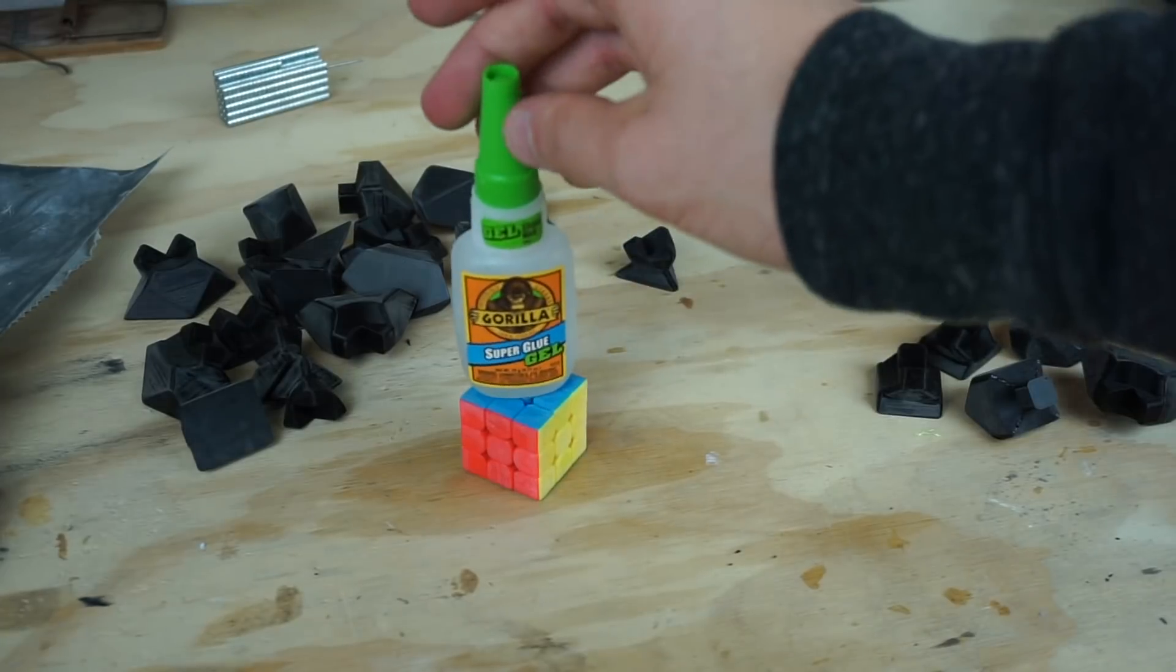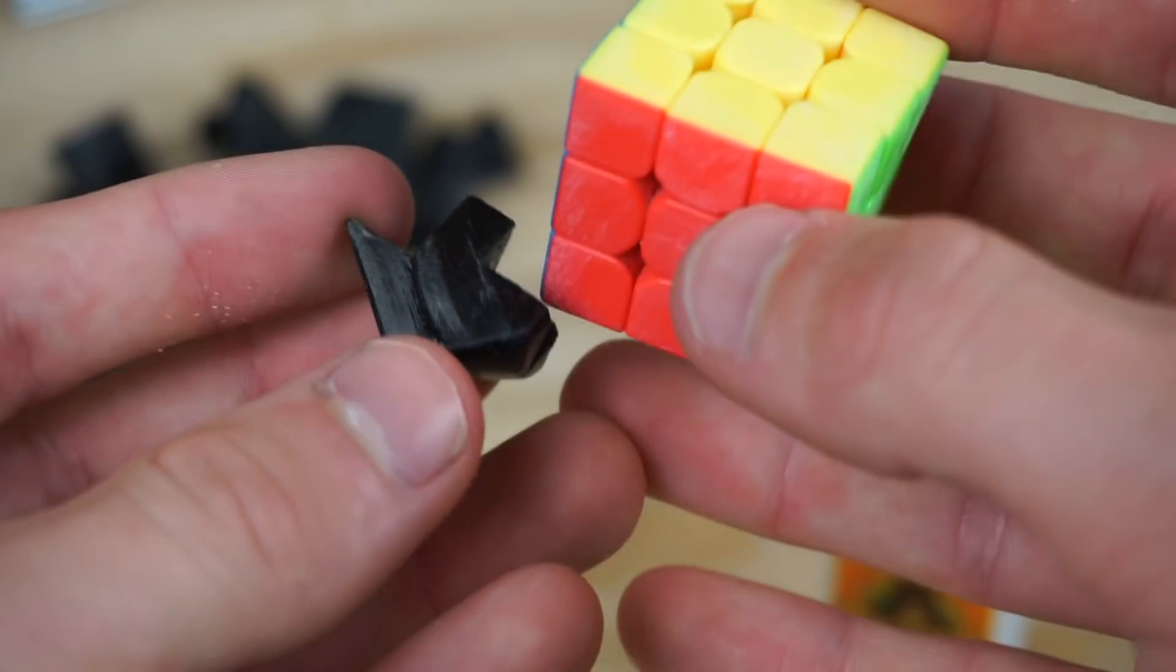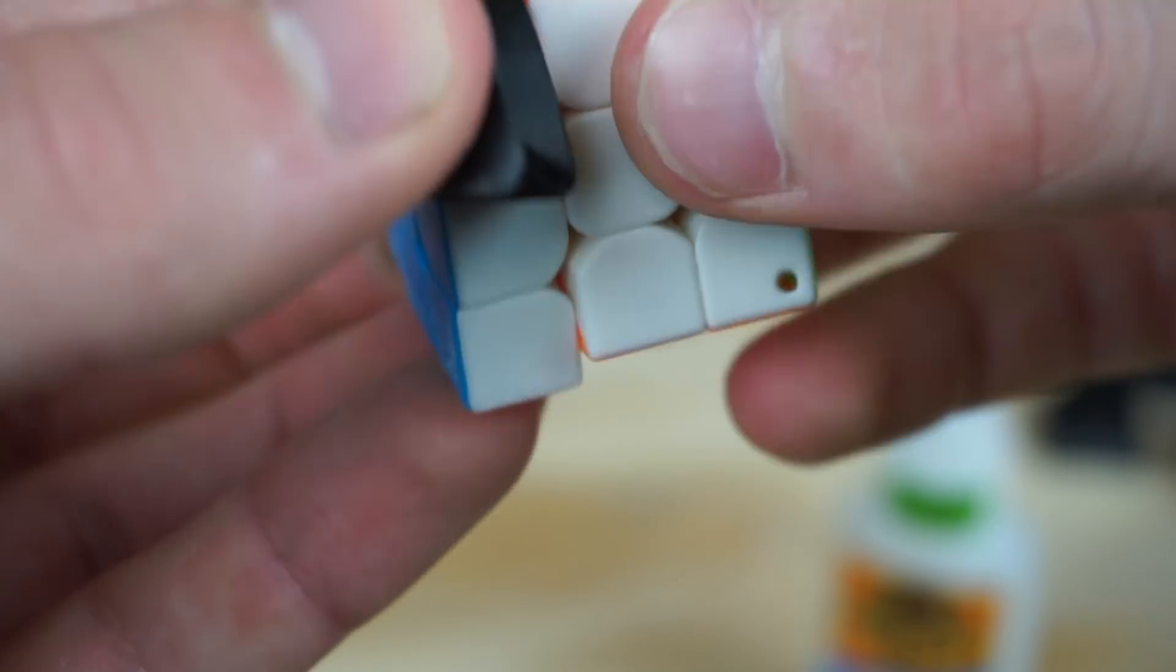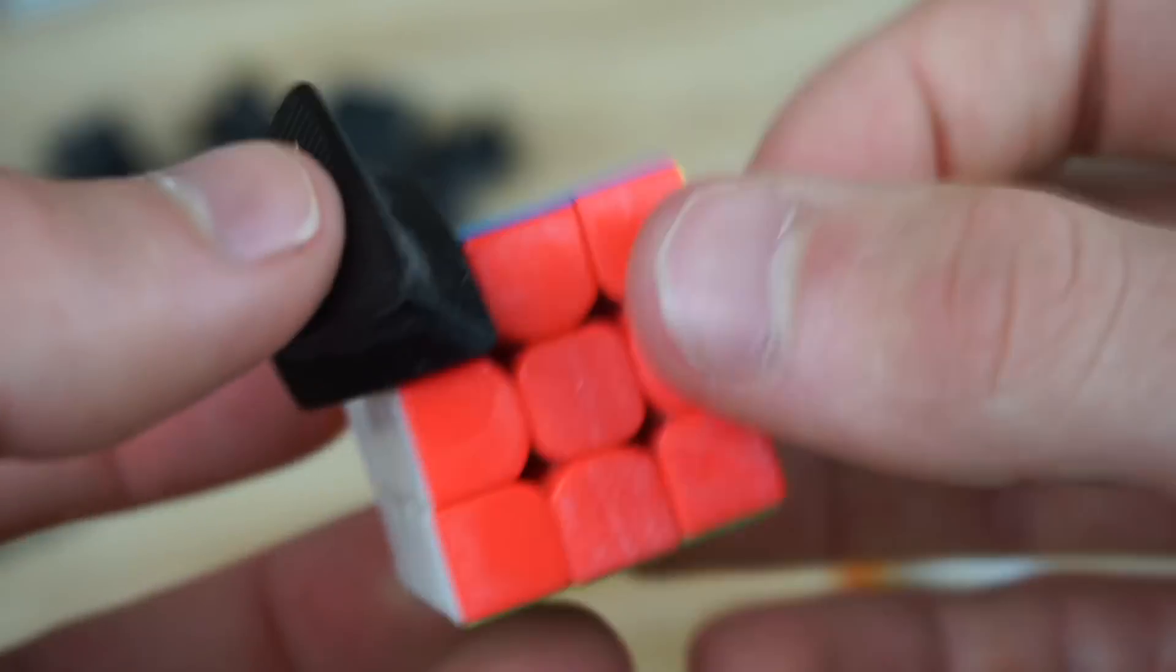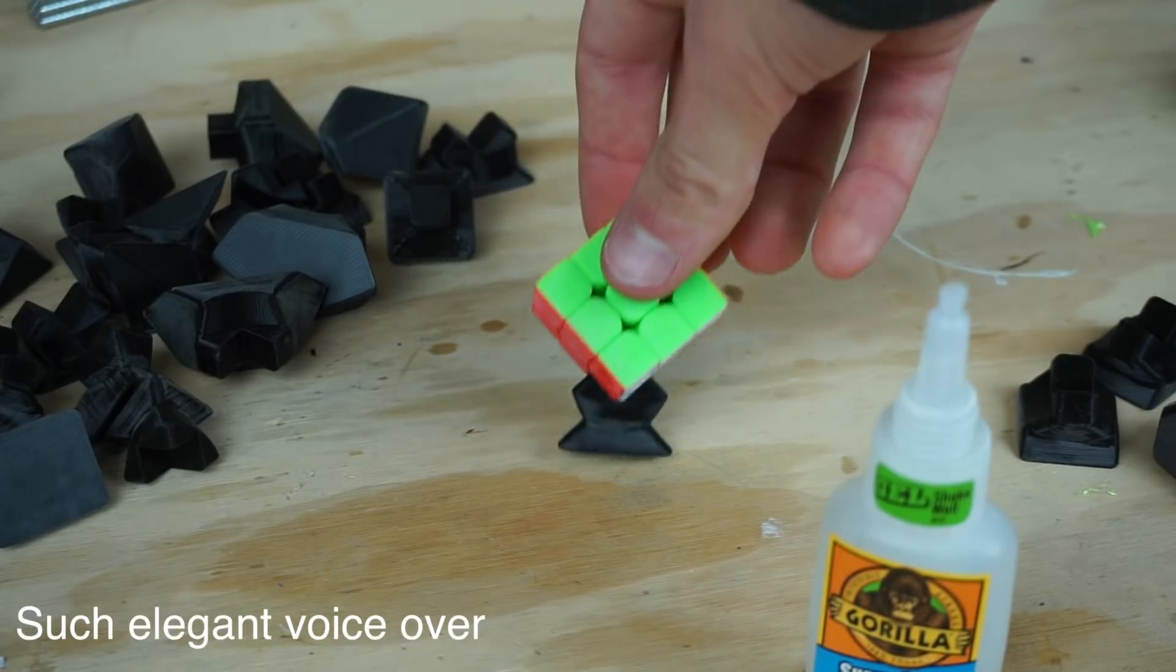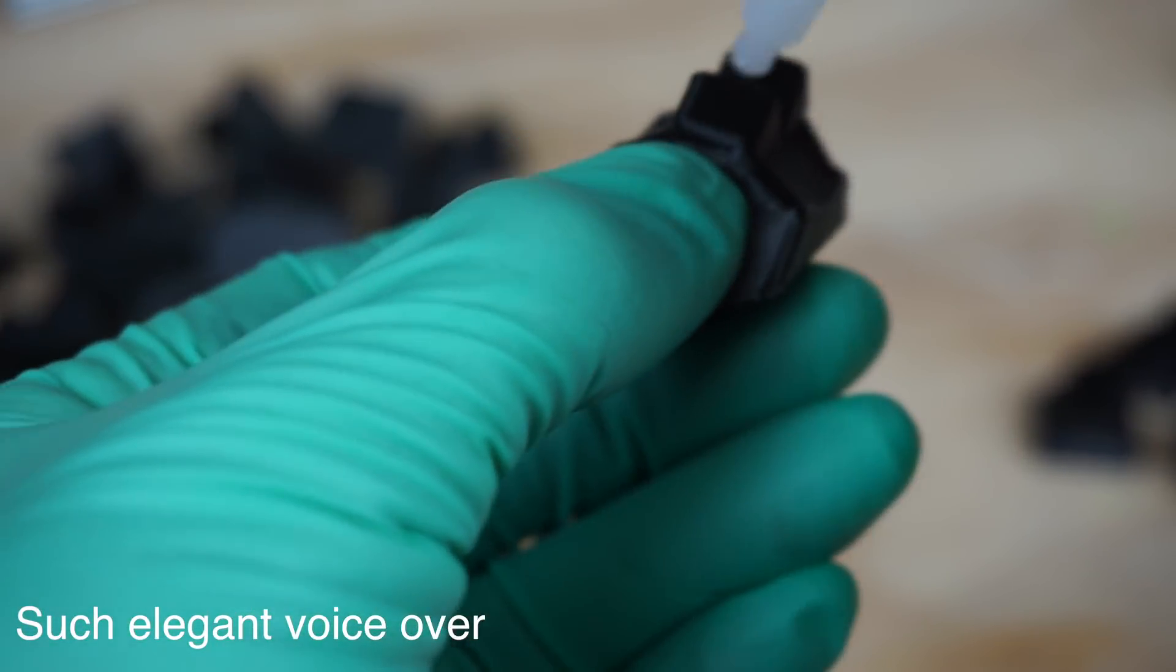After sanding both the faces and the extensions, it was time to superglue it together. So here's the first corner. You'll notice as I glue the pieces on here, I make sure to keep turning the different faces to make sure that the puzzle doesn't get glued together.